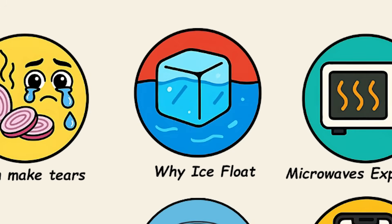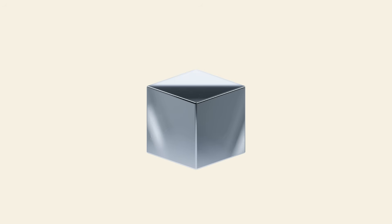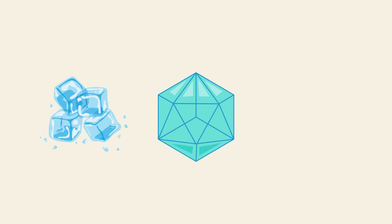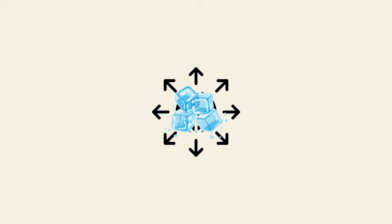Why ice floats on water. It seems backward, right? Most substances become denser as they cool and sink, but not water. When water freezes, its molecules arrange into a crystalline structure that actually takes up more space than liquid water. This expansion makes ice less dense, which is why it floats.